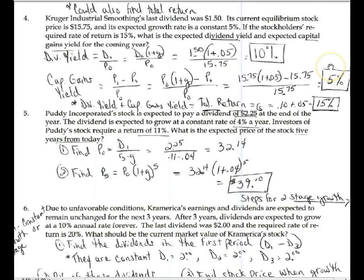Question four: I have Kruger Industrial Smoothing, and their last dividend was $1.50. Their current equilibrium stock price is $15.75. When market price equals intrinsic value, the stock is selling at its equilibrium — that equilibrium price is $15.75. The growth rate is 5% and the stockholder's required rate of return on average is 15%. I ask you to find the expected dividend yield, the expected capital gains yield, and you could also find the total return, which is the same as R sub S. These equations are on the equation sheet for this chapter.